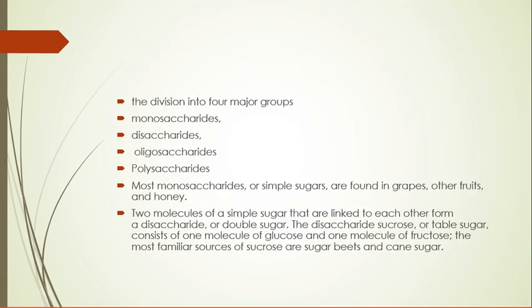Carbohydrates are divided into four major groups: monosaccharides, disaccharides, oligosaccharides, and polysaccharides. Most monosaccharides, or simple sugars, are found in groups of fruits and honey. Examples of monosaccharide, disaccharide, oligosaccharide, and polysaccharide will be discussed. Two molecules of a simple sugar linked to each other form a disaccharide.